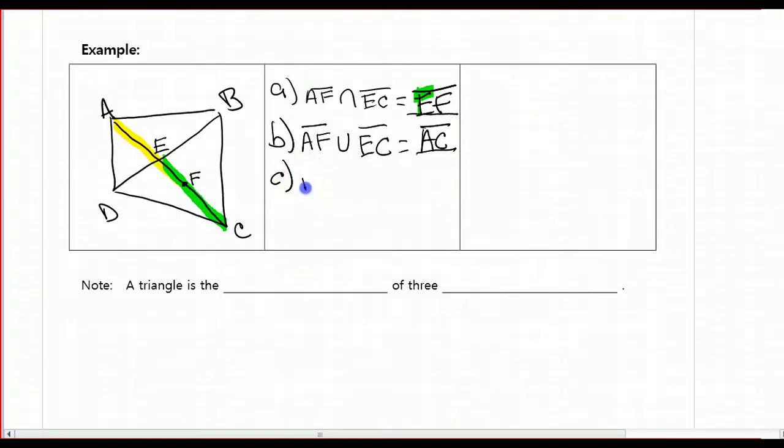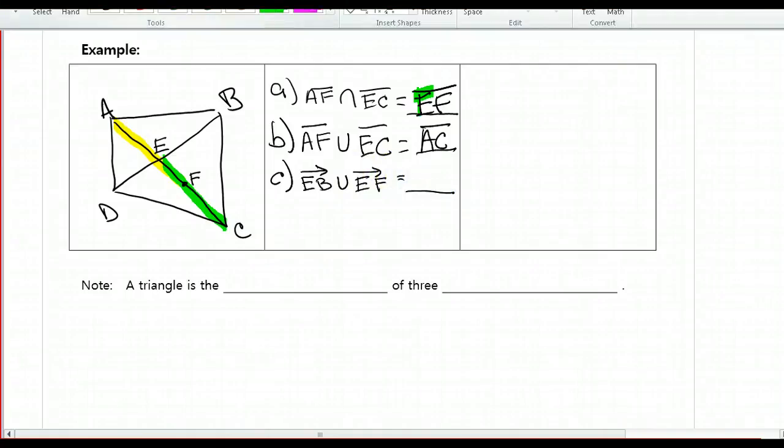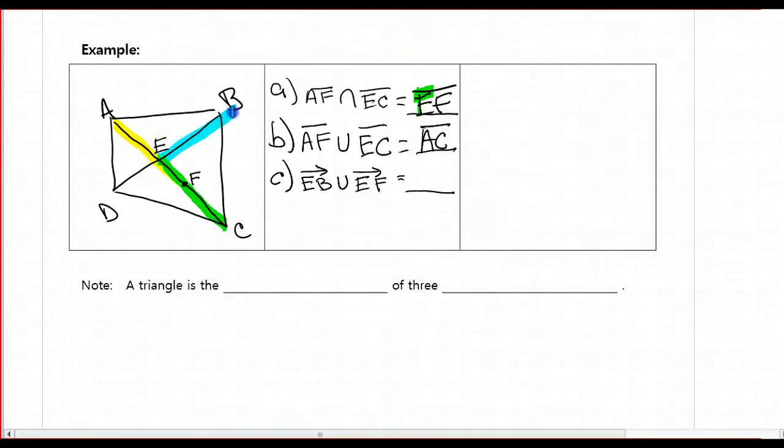For part C, we're going to find the union of ray EB and ray EF. I'm going to grab another highlighter. Ray EB goes this way and ray EF starts at E and goes in the direction of F forever. I can see that when I put those two rays together, they have a common endpoint, the vertex. It's going to be angle BEC. We could also call it BEF if we wanted to. So angle BEC.